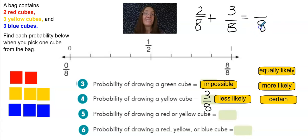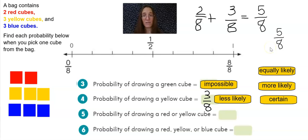So since we're adding eighths, they'll stay eighths when we add them, and two plus three is five. That means five eighths of the bag is what you could be a favorable outcome. So now we know that if we want a red or a yellow cube, it's going to be five eighths of a chance. Well, what does that mean with probability?